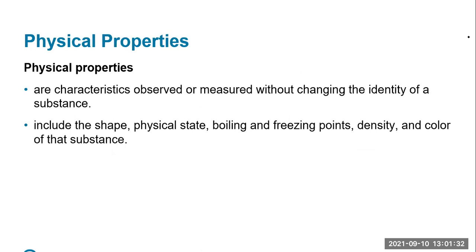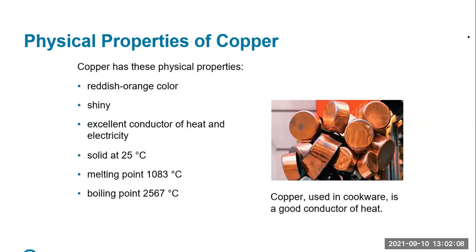Physical properties are characteristics that are observed or measured without changing the identity of a substance. They include physical state — solid, liquid, or gas — as well as boiling points, freezing points, density, and color. For example, copper's physical properties include: reddish orange, shiny, it's a metal and a good conductor of heat and electricity, it's a solid, and it has specific melting and boiling points.